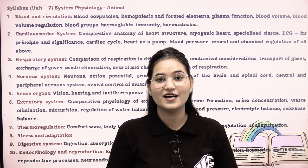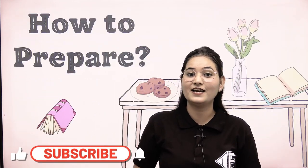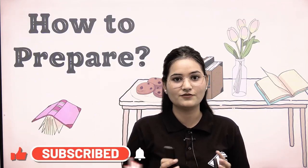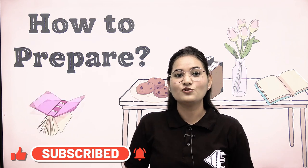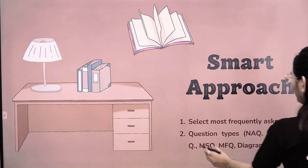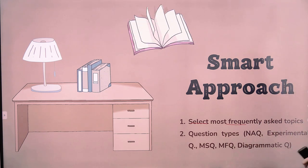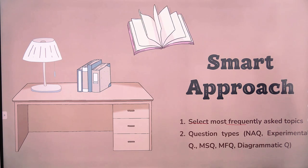In total, there are 8 sections, and in every section there are 7–8 topics, making a total of 80–85 topics in Animal Physiology alone — which is a lot. So how do you prepare them? Because preparing, revising, and recalling all of them is a little bit difficult. So, how do we prepare with a smart approach? The smart approach means we first target the most frequent topics.